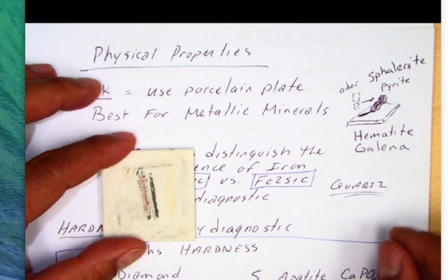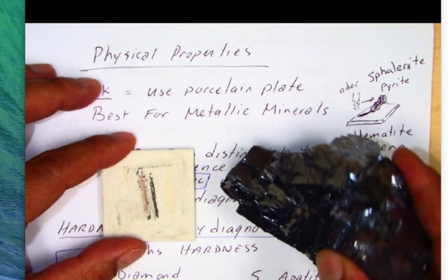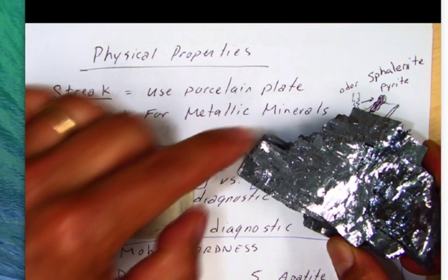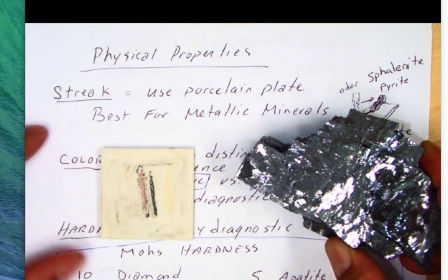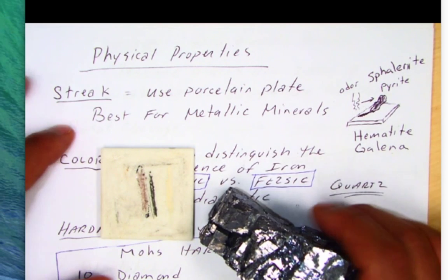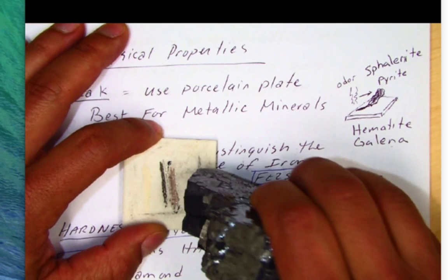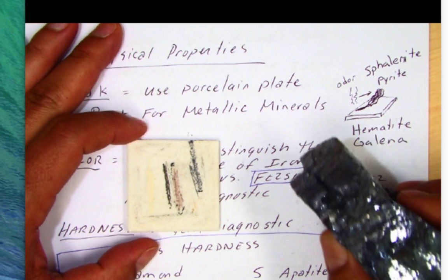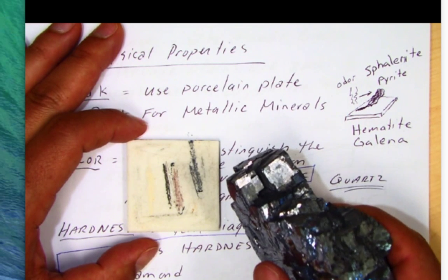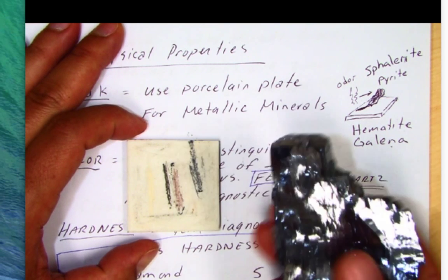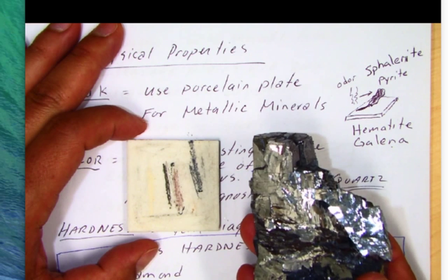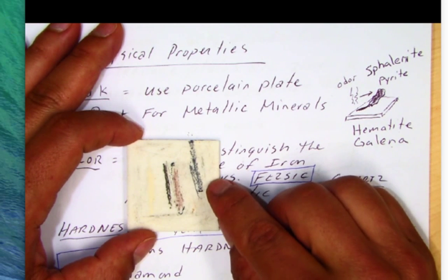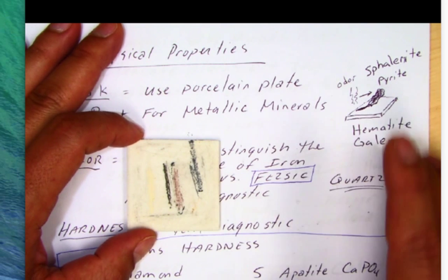Galena is the last one for streak. Galena is a really pretty mineral. One thing you'll see right away is it has sharp edges, 90-degree angles, and excellent cleavage — you can see the steps going up, all at about 90 degrees. When I do the streak test on this mineral, it gives me another dark gray. So dark gray for galena. Also, galena has an extremely strong heft — meaning how much it weighs — its density is very high because it's a lead sulfide, so it's very heavy. You can see the gray streak here versus hematite's red streak.